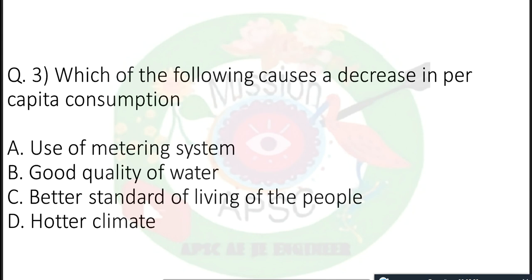Next question: Which of the following causes a decrease in per capita consumption? Use of the metering system — when a metering system is in operation, water consumption becomes less. Living standard: if the standard of living is high — for example, a bathroom because of high standard — ultimately water consumption will increase. Hotter climate also increases water consumption. The correct answer for decrease is option A: use of metering system.